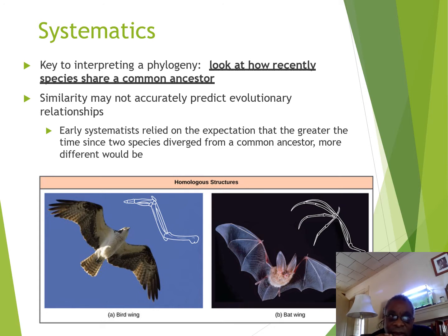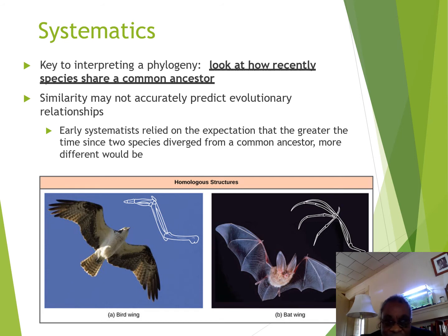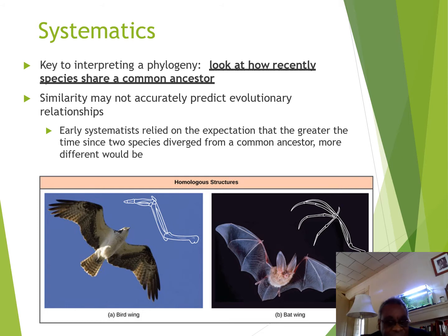The important thing about interpreting a phylogenetic relationship is looking at how recently species share a common ancestor. Physical similarity doesn't necessarily accurately represent how animals are related. Early systematists relied on the expectation that the greater the time between two species diverging from a common ancestor, the more different they would be. This is completely contradicted when we look at birds and bats — they physically seem very similar, but bats and birds are very distantly related.